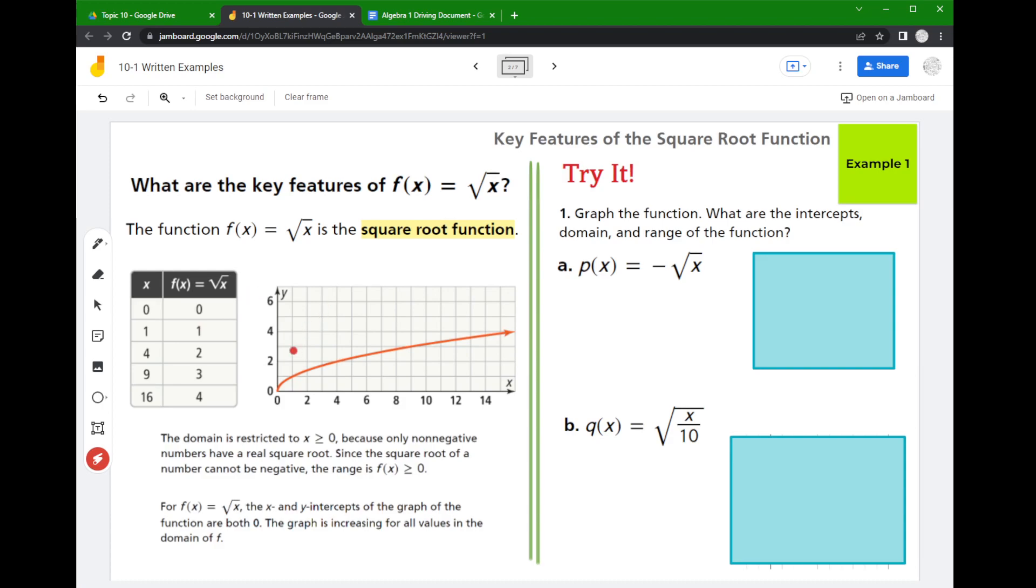And so what happens is you tend to get this graph that looks like this. It's almost like a parabola that fell over. In fact it kind of is a parabola that fell over.